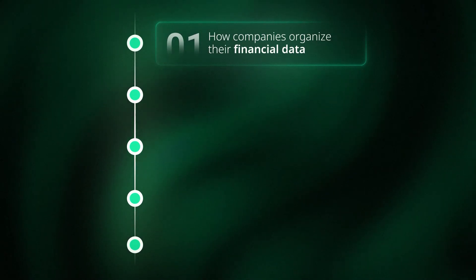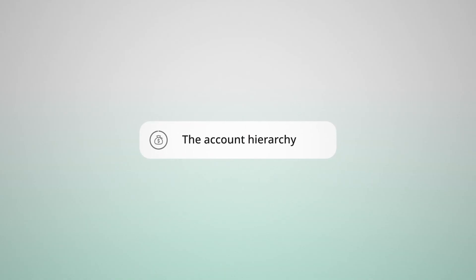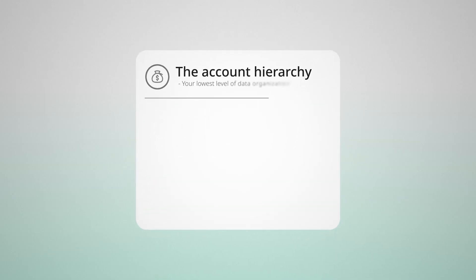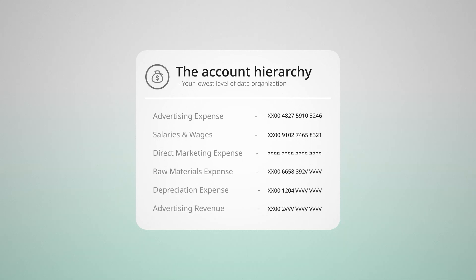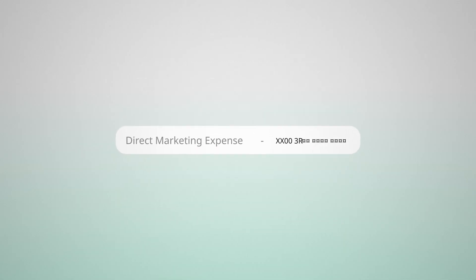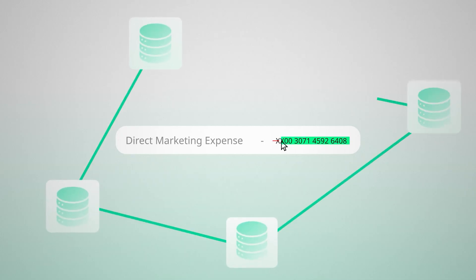Let's start with the foundation: how companies actually organize their financial data. The first thing you need to understand is the account hierarchy. This is your lowest level of data organization, and every expense and revenue item gets its own unique account number. For example, your direct marketing expense would have its own specific account number. While account numbers aren't strictly mandatory, they're highly recommended for creating connected databases, because regular names are too prone to small typos that break connections.